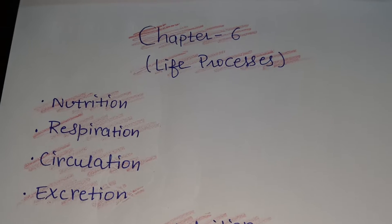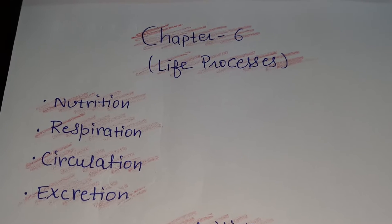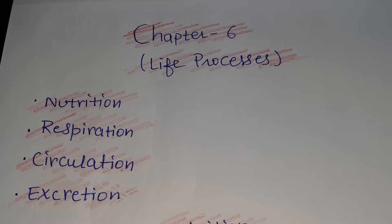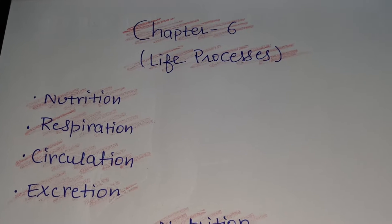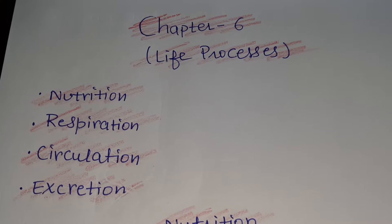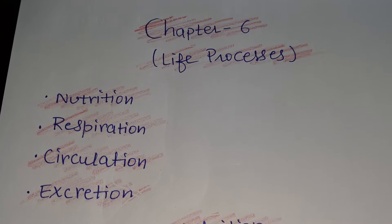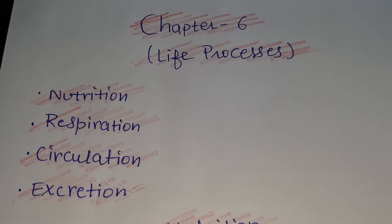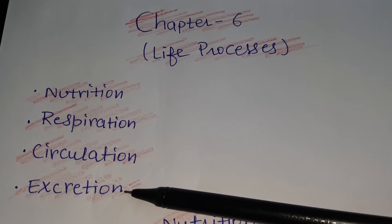Hello students, hope you are all doing well. We were discussing Chapter 6: Life Processes. Before coming to the main topic, let's revise a bit. Life processes are those processes which are very essential for the survival of any organism on this earth. There are basically four processes essential for any individual: nutrition, respiration, circulation, and excretion.